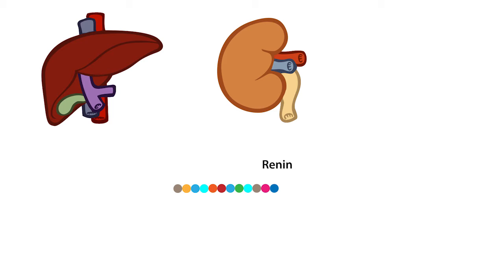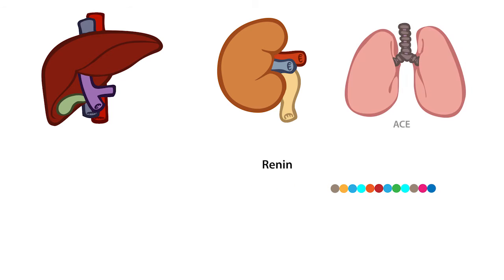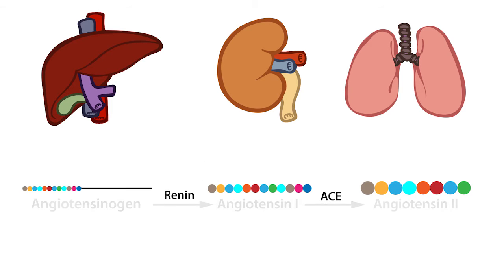Soon after angiotensin-1 is cleaved from the angiotensinogen protein, the angiotensin-converting enzyme, or ACE, which is constitutively secreted by the lungs, cleaves 4 of the last 12 amino acids from angiotensin-1, leaving us with the first 8 amino acids, which is referred to as angiotensin-2.